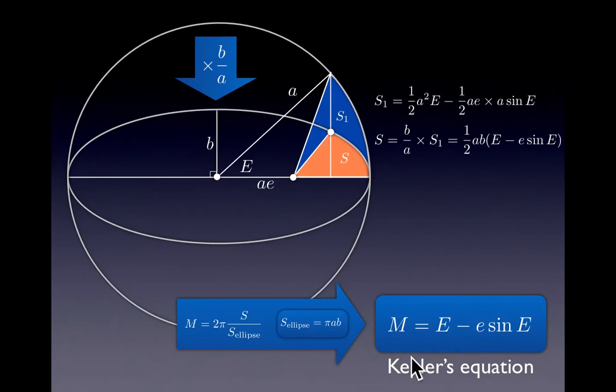In this video we want to derive Kepler's equation, which is a relation between the area defined by a point on an ellipse, the boundary of the ellipse, and the eccentric anomaly, an angle which is defined by this construction.